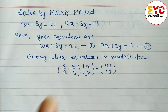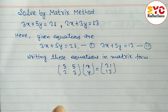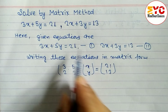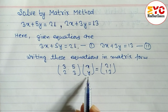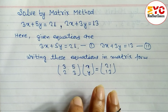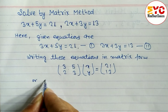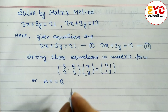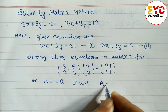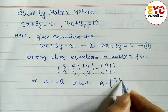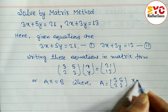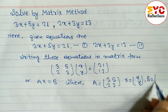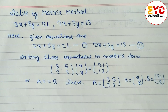When we multiply the two matrices, we get 3x plus 5y equal to 21, and 2x plus 3y equal to 13. This is in the form AX equals B, where A equals [3, 5; 2, 3], X equals [x; y], and B equals [21; 13].